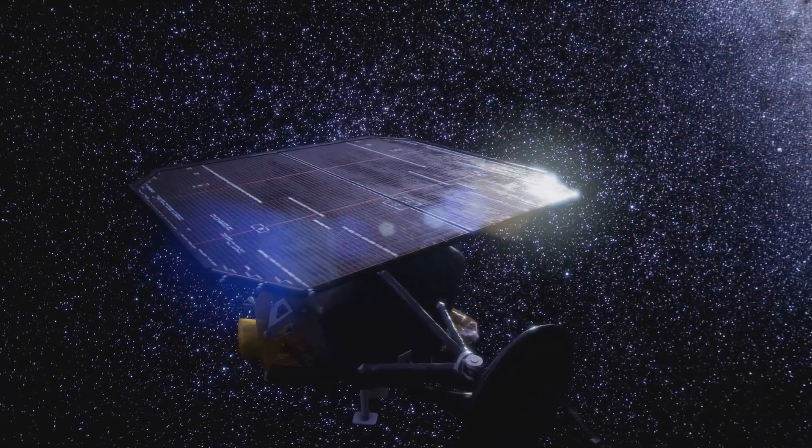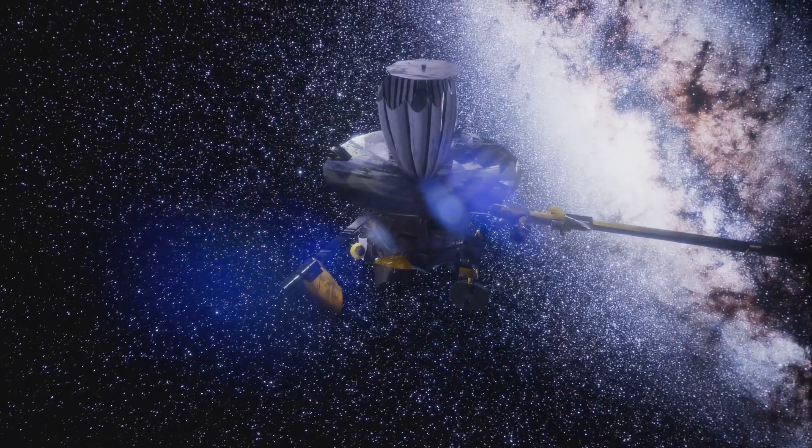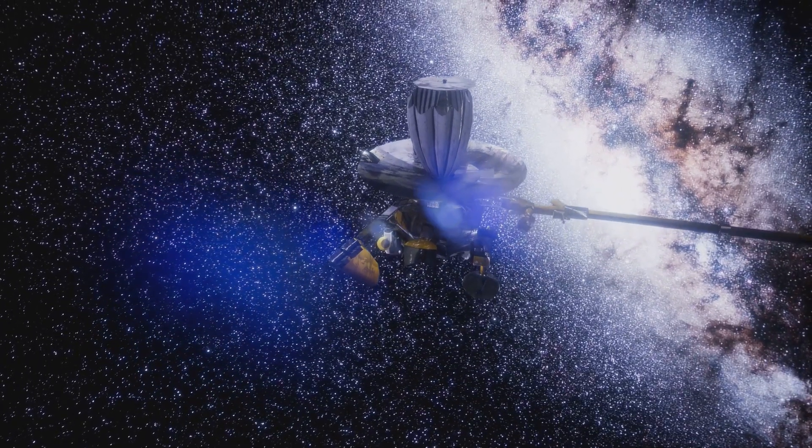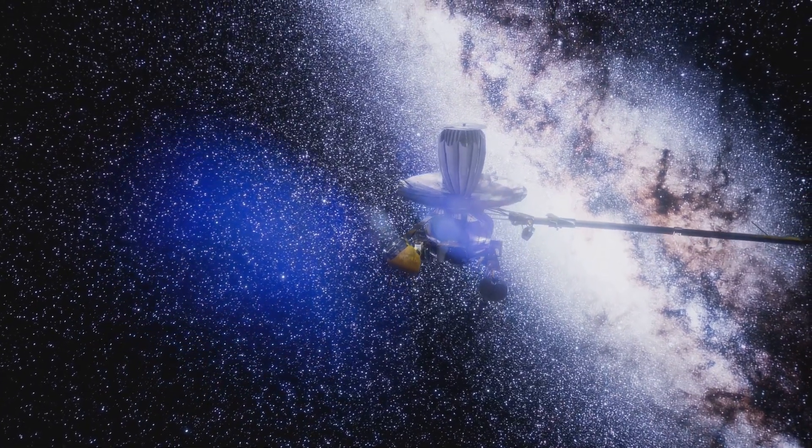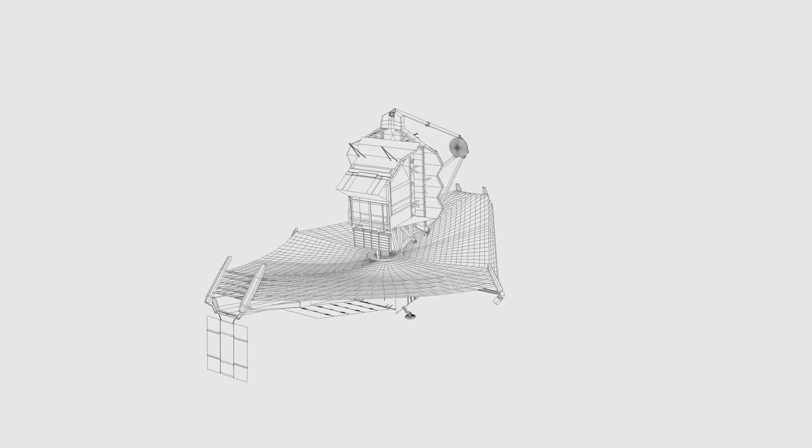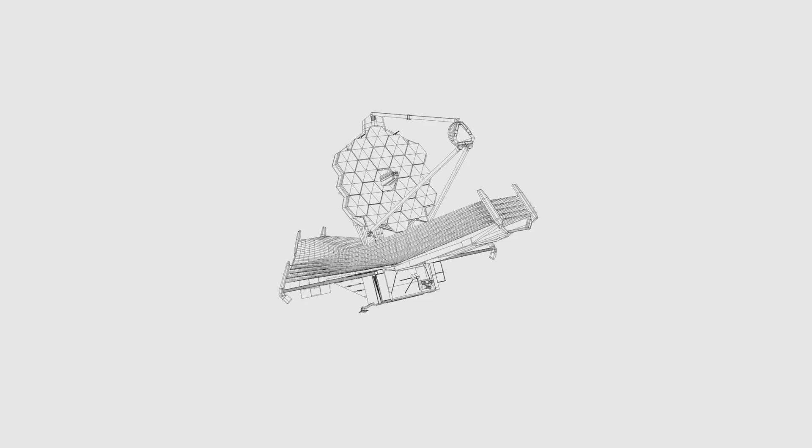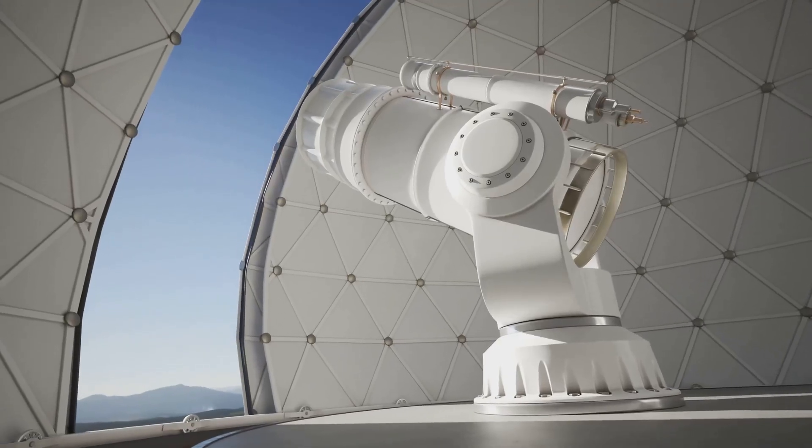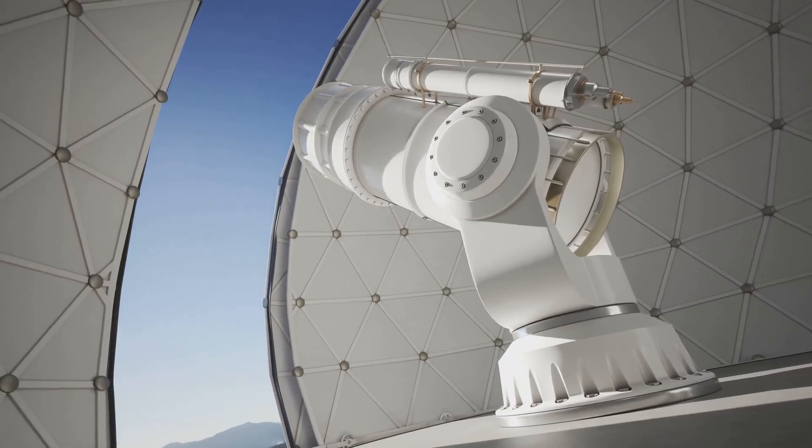A 6.5-meter diameter mirror made up of 18 hexagonal segments was sent soaring into the sky, destined for a solar orbit near the Sun-Earth L2 Lagrange point, about 1.5 million kilometers from Earth. The launch was not just about sending a telescope into space, it was about launching a dream into reality, a dream of revealing the universe's deepest secrets and perhaps finding answers to our most profound questions.